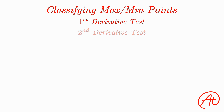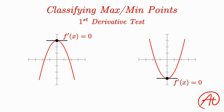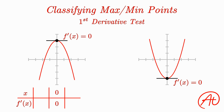Let's first go over the first derivative test. This test utilizes the function's first derivative, or slope, to distinguish between a maximum and minimum point. We already know that the slope is equal to zero at a max or min, but what is the behavior of the slope on either side of this point? I like to make a table where we plug in certain x-values and their corresponding slope values. For a maximum at x equals zero, the slope is zero. Plugging in a point to the left like x equals negative one, we get some positive slope value, and plugging in a point to the right like x equals positive one, we get some negative slope value.